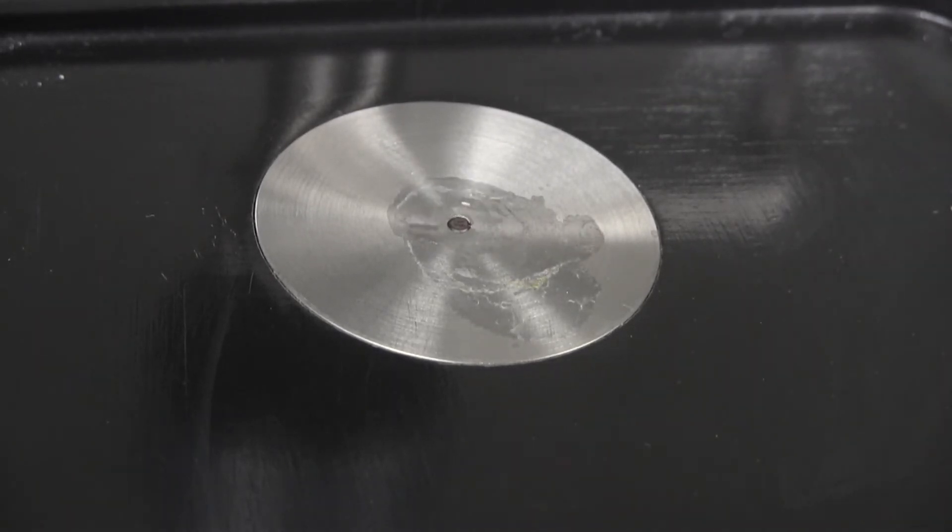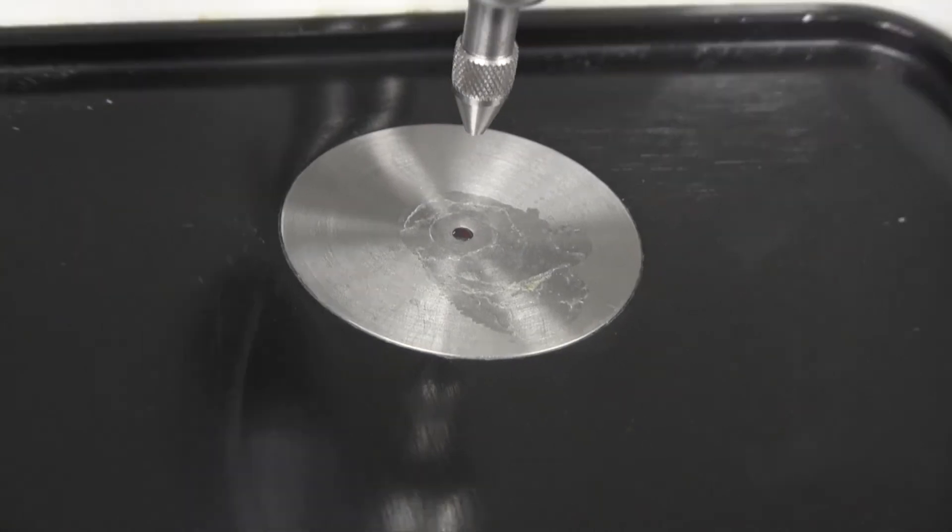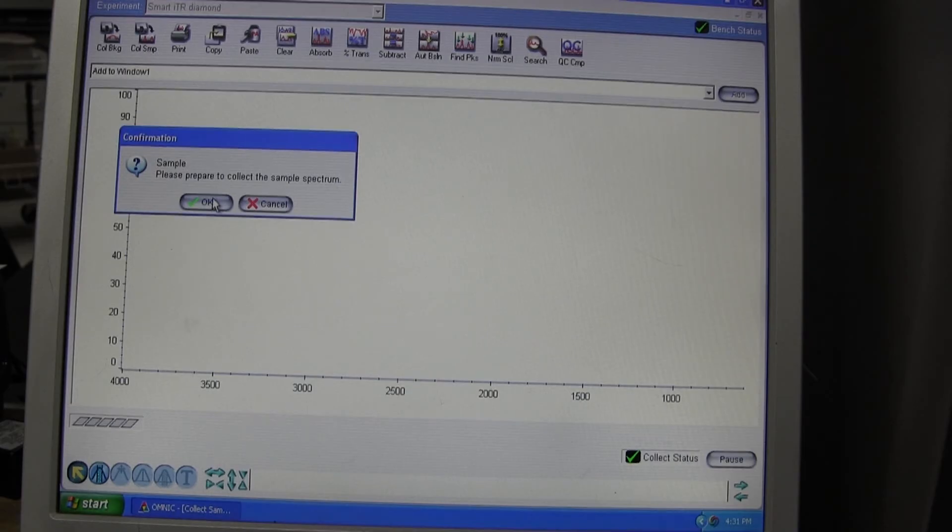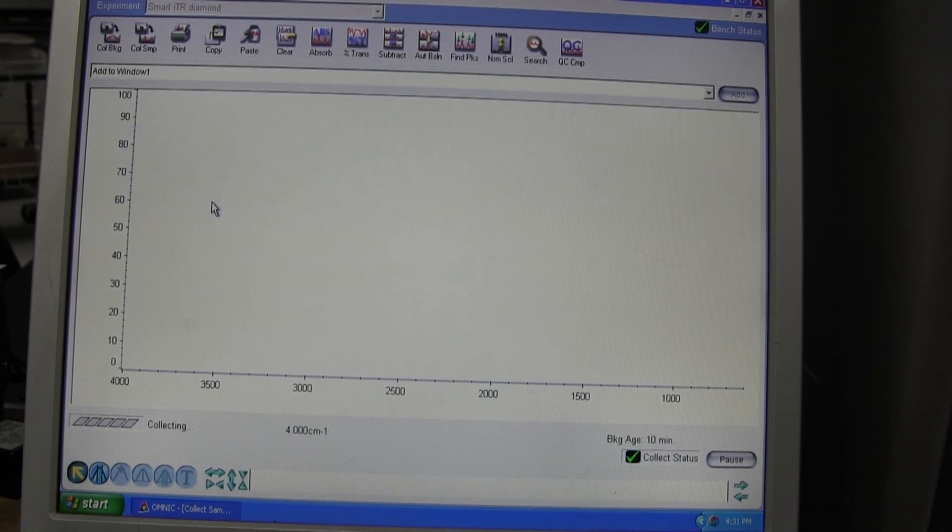You should be able to see a thin film of your unknown covering the crystal. If so, move the arm of the IR machine over the crystal and lower until you hear one click. You are now ready to begin collecting. Choose Collect Data from the pop-up window and, again, avoid bumping or touching the table.